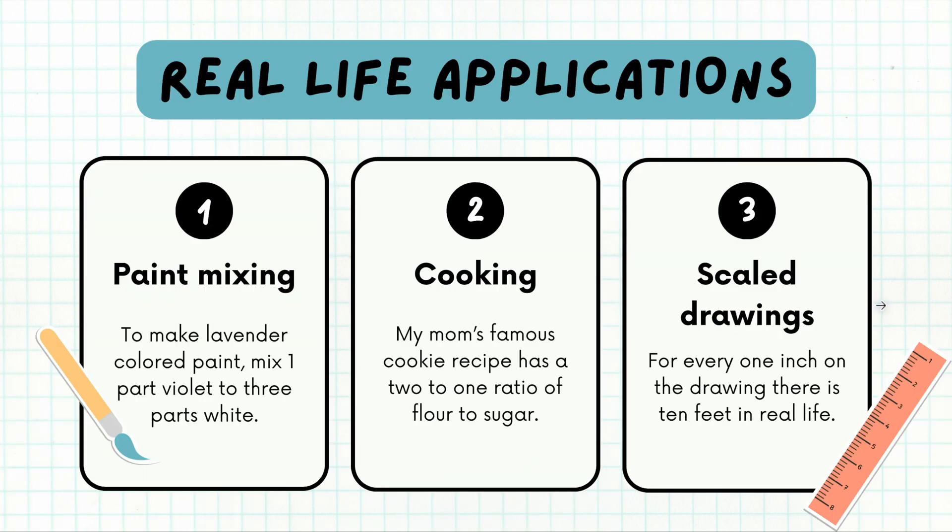Ratios can be applied in real life, and that's why ratios are so important to learn about. Think about if you were mixing paint. In order to make lavender colored paint, you must mix one part violet to three parts white, and that's the ratio of 1 to 3.